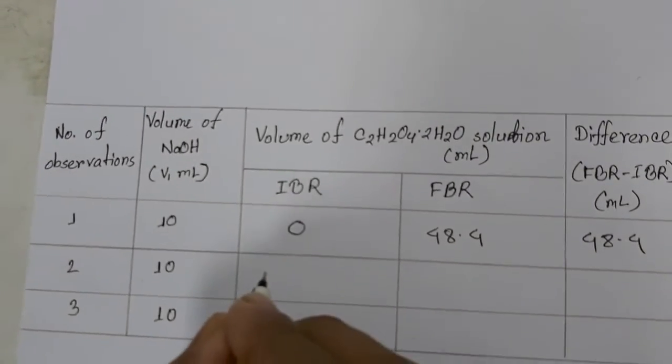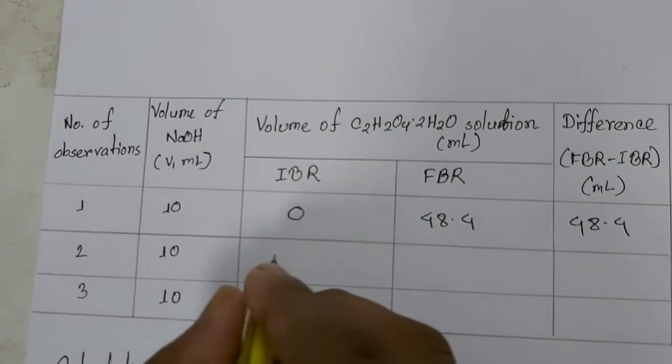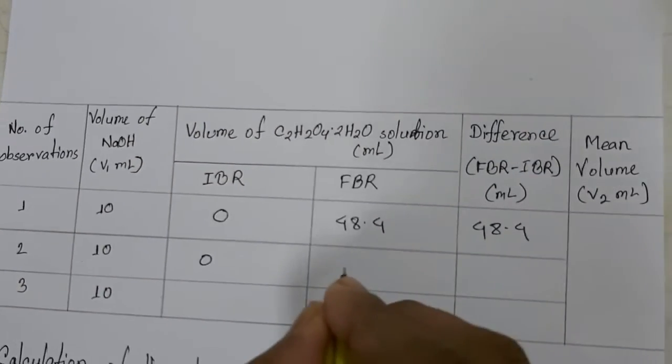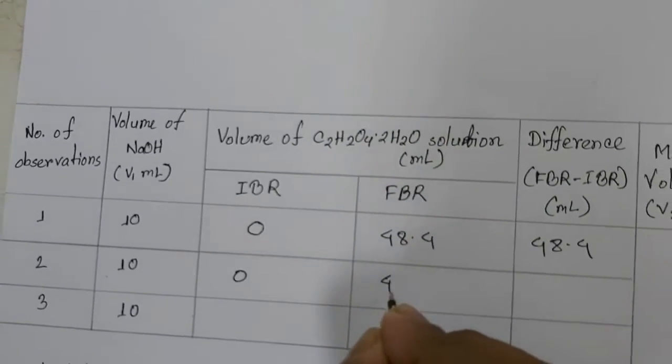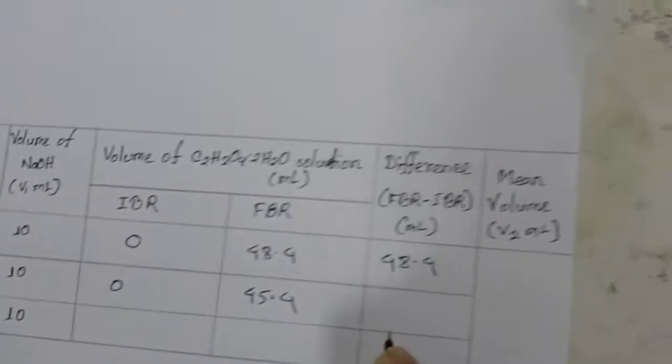This is the value for the second titration. It was started at 0 and ended at 45.4. The difference is 45.4.